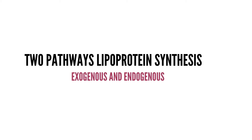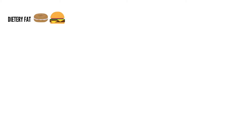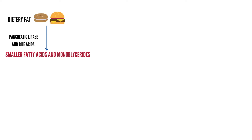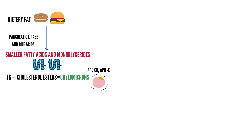The exogenous pathway begins with dietary fat intake. Triglycerides in the fatty diet are broken down by pancreatic lipase and bile acids into smaller fatty acids and monoglycerides. After absorption from the intestinal epithelium, the triglycerides are reformed and packaged with a very small amount of cholesterol esters to form chylomicrons. Like all other lipoproteins, there are apoproteins in the outer shell. The apoproteins on chylomicrons are B48, E, A1, A2, and C2.